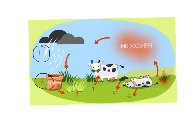Now that plants have this usable nitrogen, it brings us to step three. At step three, plants build up proteins and DNA using this usable nitrogen they get from the soil.